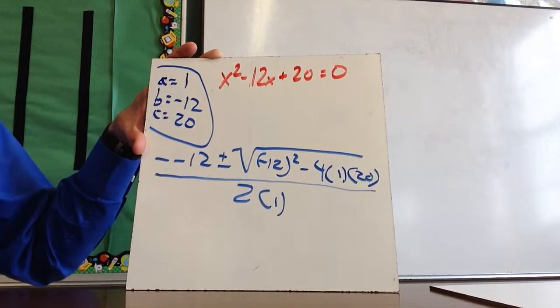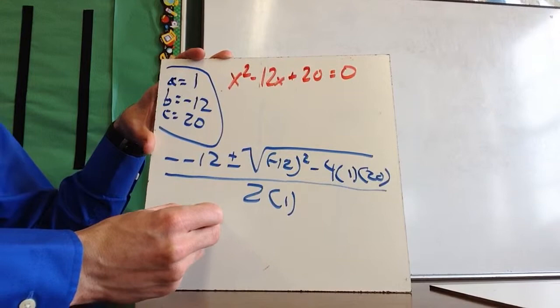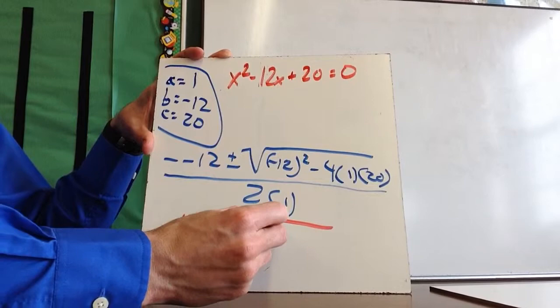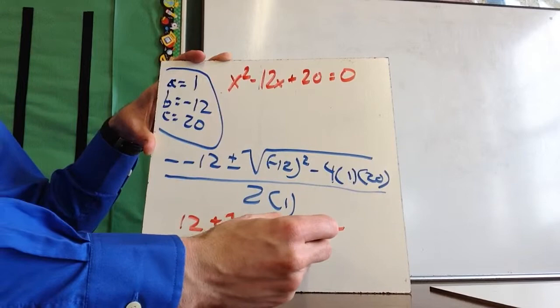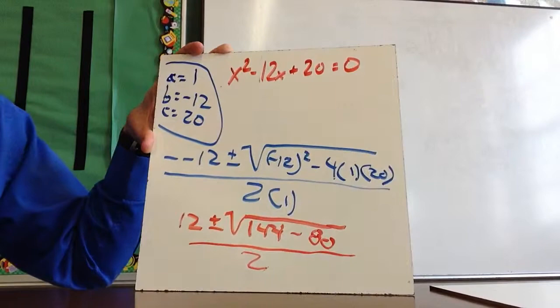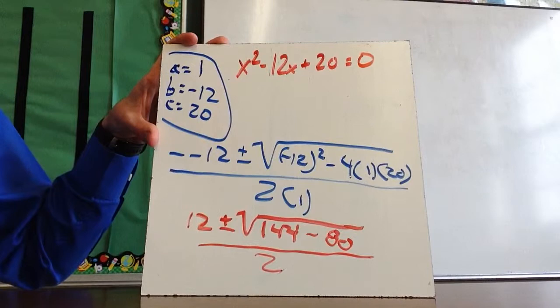As I simplify, try not to do too much in your head. Negative negative 12 becomes positive 12. Negative 12 squared is positive 144 — anything squared is always positive. Minus 4 times 1 times 20 is minus 80. All of this over 2. Next, I simplify 144 minus 80.